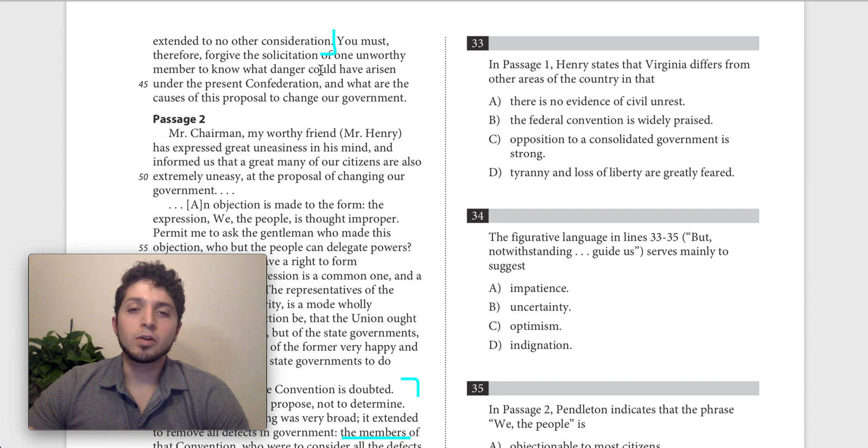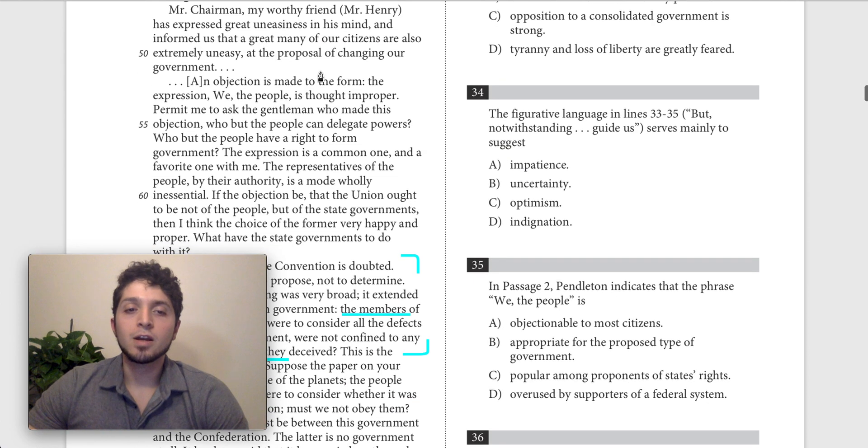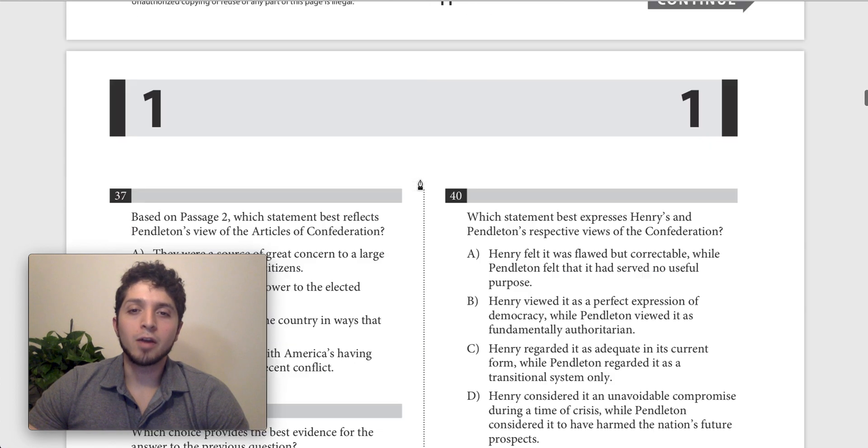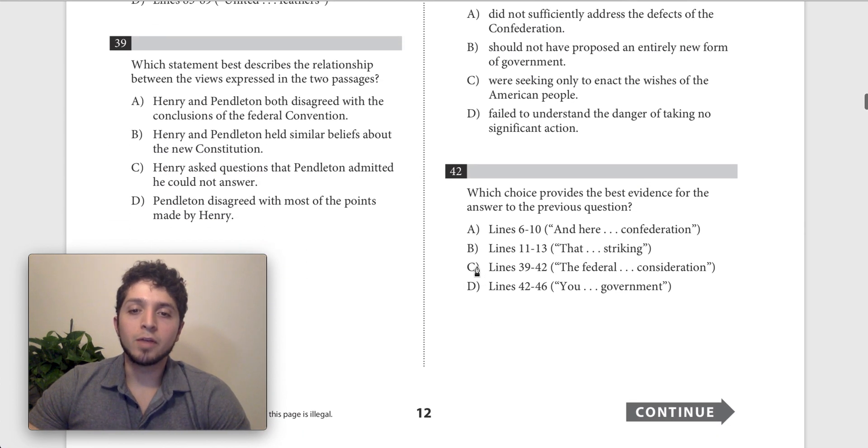Again, I think this does not really have to do with the powers that the convention had, which is what Pendleton is talking about. So I don't think this is a good choice. So I really do think C is our best option. I feel pretty confident with that.